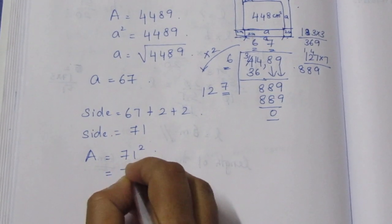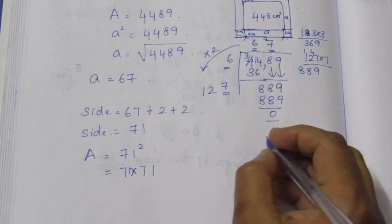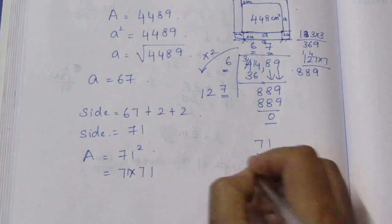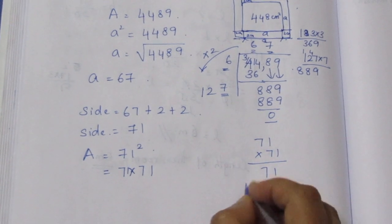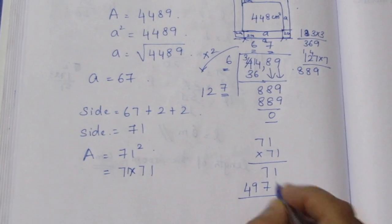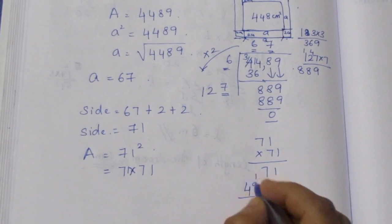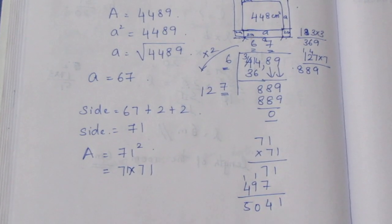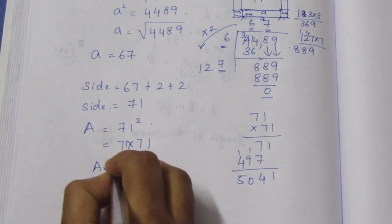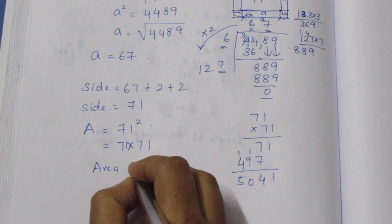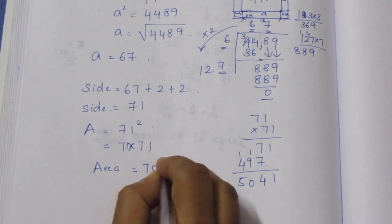The full area equals 71 squared, which is 71 into 71. Computing: 1 times 7 is 7, 7 times 7 is 49, 7 times 2 is 14. The result is 5041. So the area of the full square including the liner is 5041 cm².